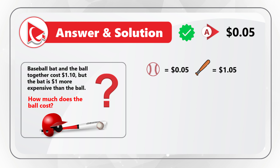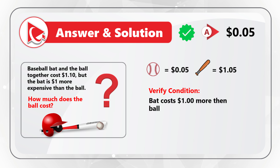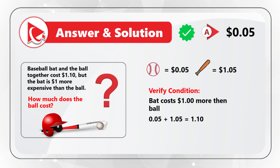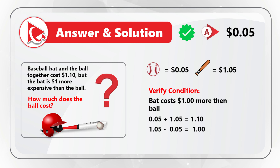Let's verify: the bat costs $1 more than the ball, which is correct. 5 cents plus $1.05 equals $1.10. And $1.05 minus 5 cents equals $1.00. So the correct answer is choice A — the cost of the ball is 5 cents. Hopefully you've nailed this problem and now know how to solve similar problems on the test.